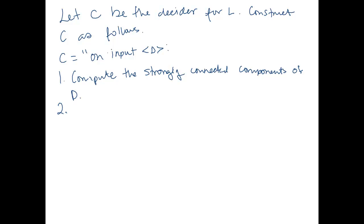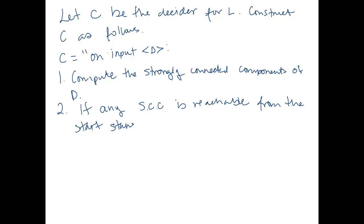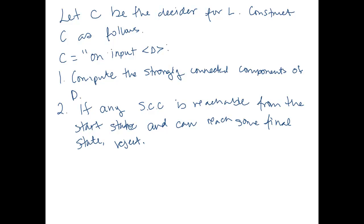Step two: if any strongly connected component is reachable from the start state and can reach — meaning there is a path from the strongly connected component to — some final state, we reject. Otherwise, accept.